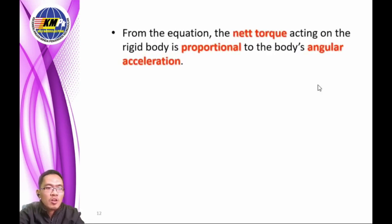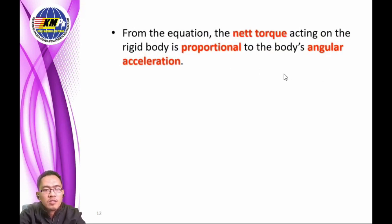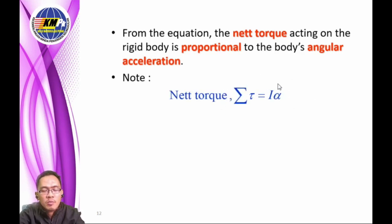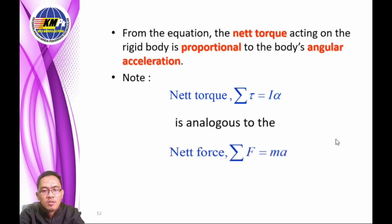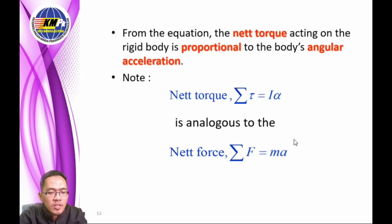So the net torque acting on a rigid body is proportional to the body's angular acceleration: tau_net equals I alpha. Comparing with linear motion where F equals ma, the moment of inertia I plays the role of mass m, and angular acceleration alpha plays the role of linear acceleration a.